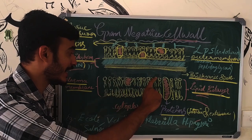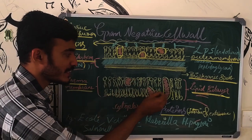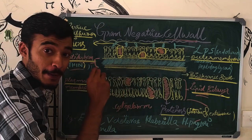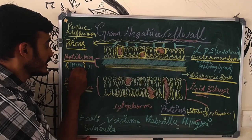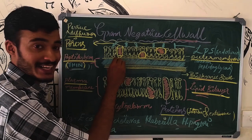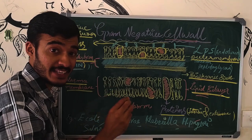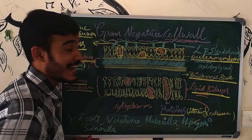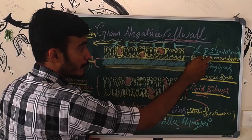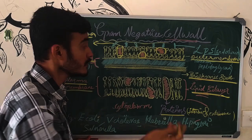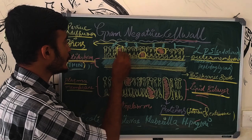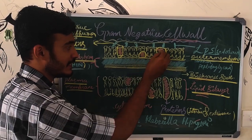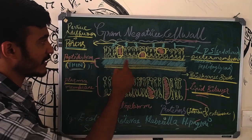We use the gram-positive cell and we use the gram-negative cell. We have proteins. In the gram-negative cell, there is a thin peptidoglycan layer. The outer membrane is a lipid bilayer. There are proteins — what are the proteins? It is passive diffusion that helps. It is an integral protein.